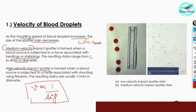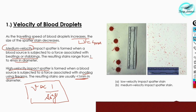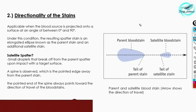High velocity impact spatter is formed when a blood source is subjected to a force associated with shooting using firearms. As we know, a bullet travels at high velocity, so injuries produced by a bullet result in high velocity impact spatter stains. The resulting stains will be less than 1 millimeter in diameter. So: low velocity stains are 4mm or greater, medium velocity 1 to 4mm, and high velocity less than 1mm.